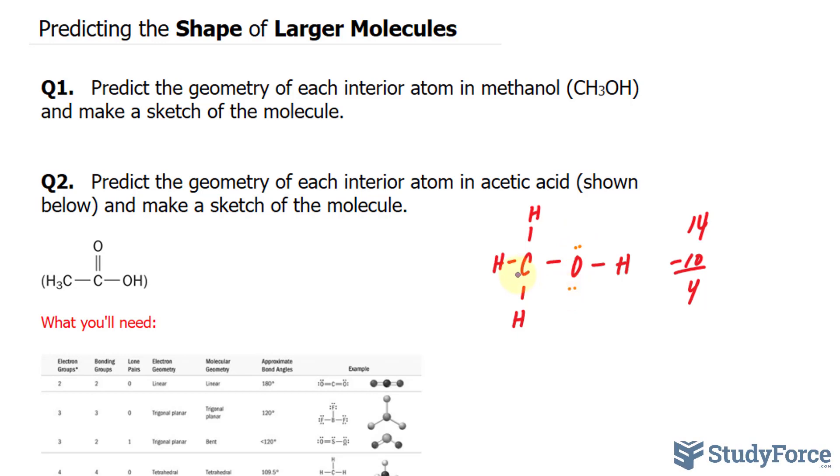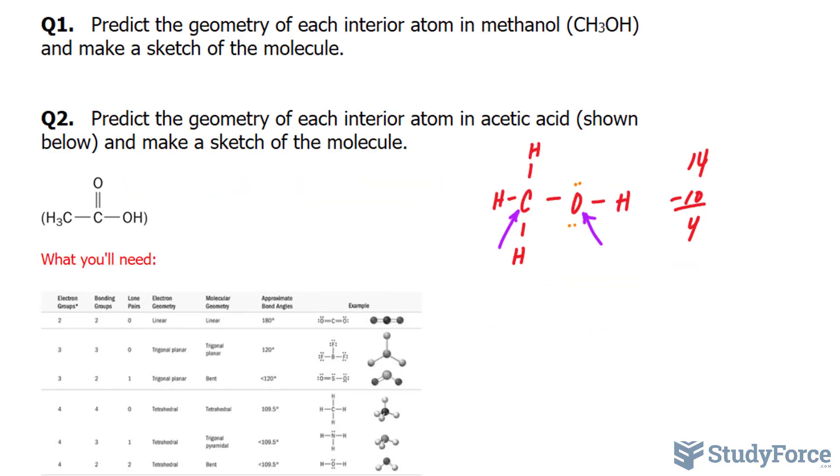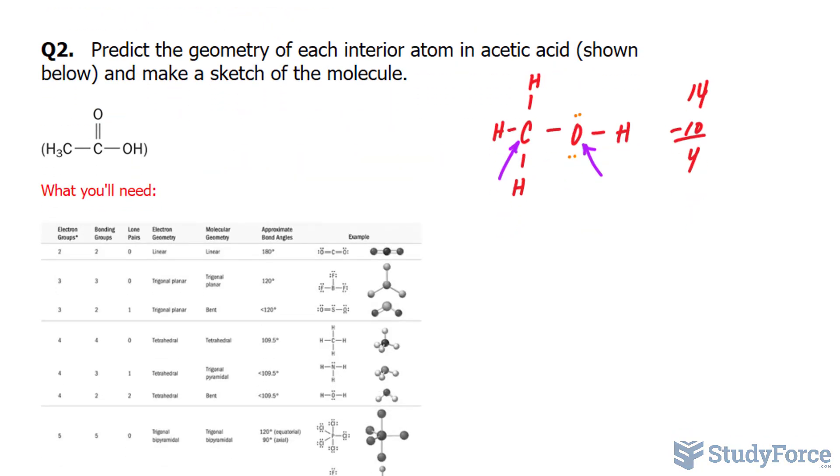We have two interior atoms, this carbon and this oxygen. We need to account now for the bonding groups for each of these, and the number of lone pairs. So starting with this carbon, it has one, two, three, four, four single bonds, and that I will refer to as four bonding groups. It does not have any lone pairs.